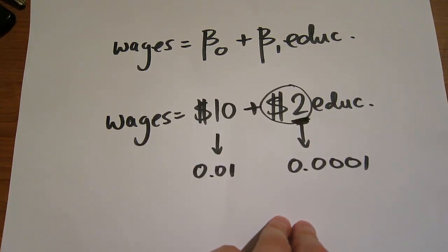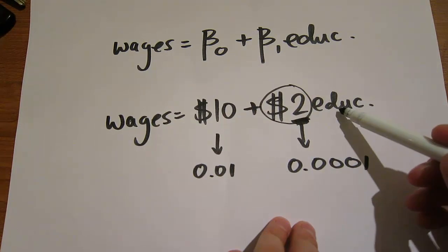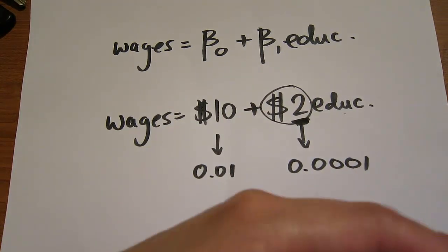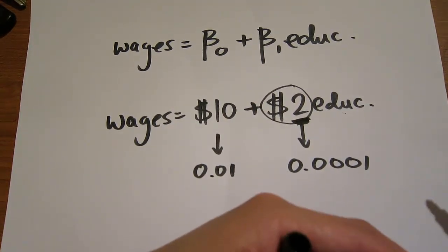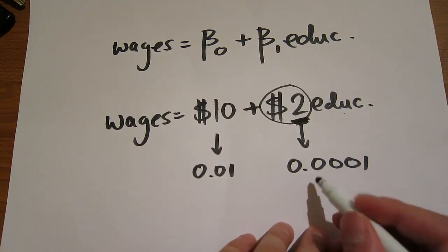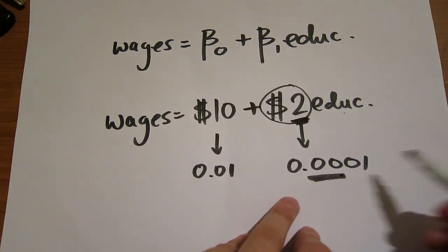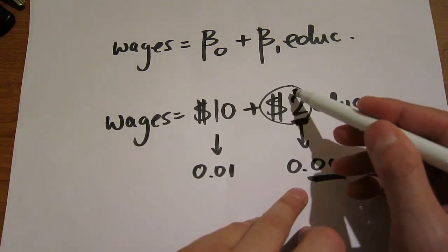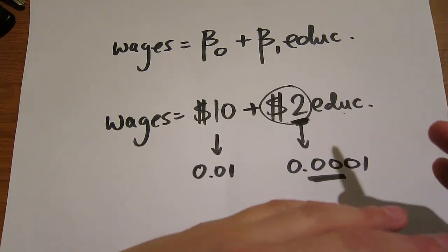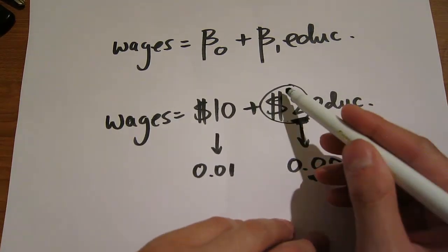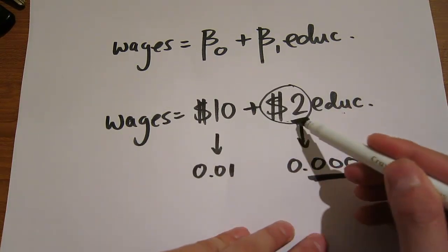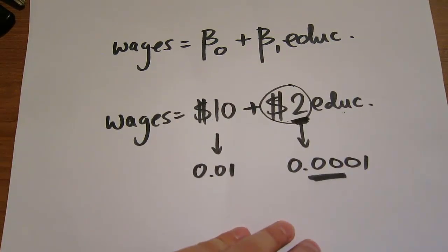Is that large? Is a $2 increase in wages for every year of education big or not? That's economic significance. Statistical significance looks at the p-value and tells us whether this $2 occurred randomly due to sampling variation, or whether this coefficient will always be close to $2 if we resample.